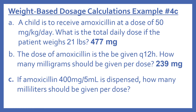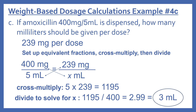Part C: if amoxicillin 400 mg per 5 mL is dispensed, how many milliliters should be given per dose? We need 239 mg per dose. Set up equivalent fractions: 400 mg / 5 mL = 239 mg / X mL. Cross-multiply: 5 × 239 = 1,195. Divide by 400: 1,195 ÷ 400 = 2.99, rounded to 3 mL. So 3 mL delivers 239 mg per dose.